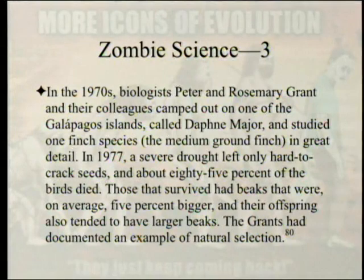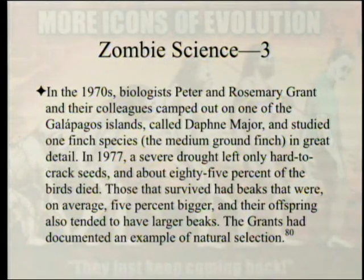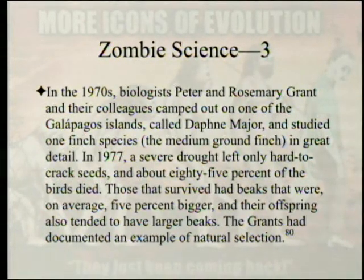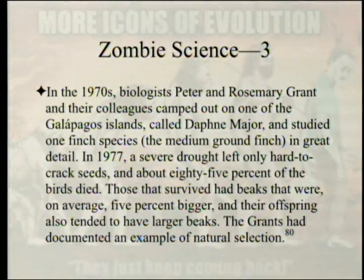In the 1970s, biologists Peter and Rosemary Grant camped out on one of the Galapagos Islands called Daphne Major and studied the medium ground finch in great detail. In 1977, a severe drought left only hard-to-crack seeds, and about 85% of the birds died. Those that survived had beaks that were, on average, 5% bigger, and their offspring also tended to have larger beaks. The Grants had documented an example of natural selection.